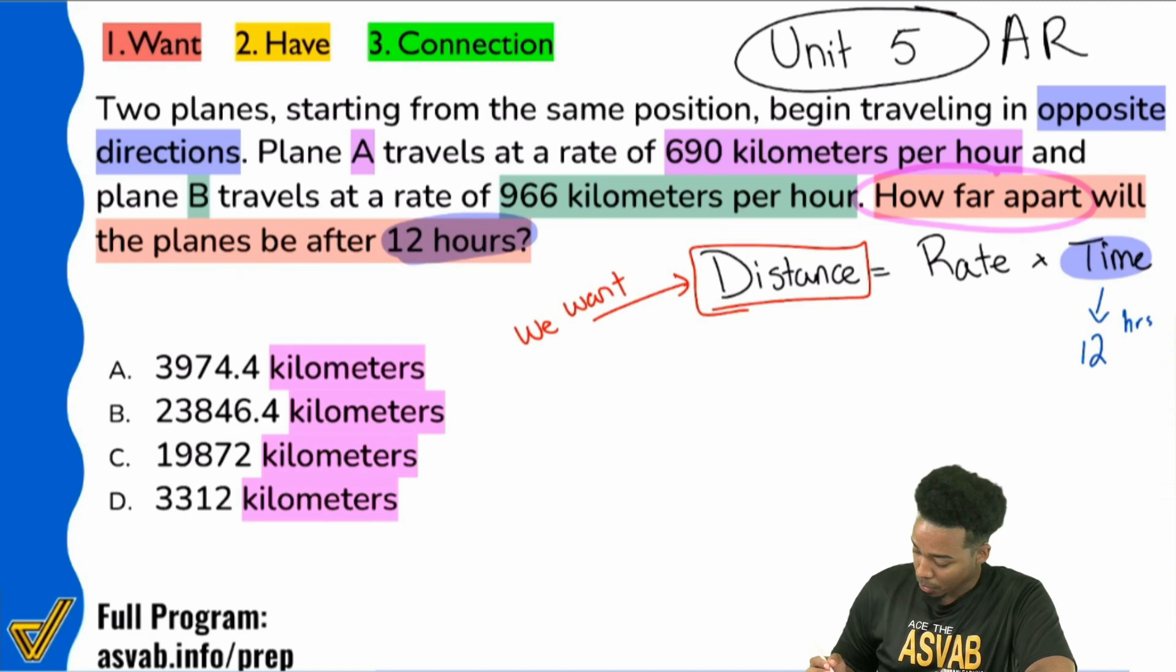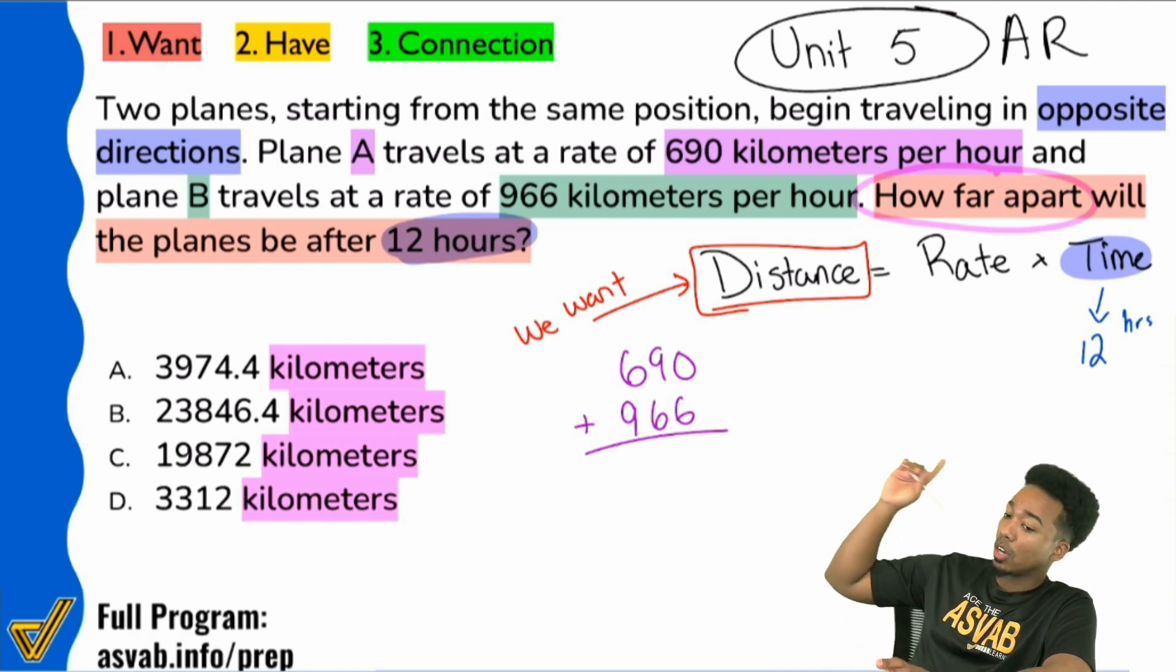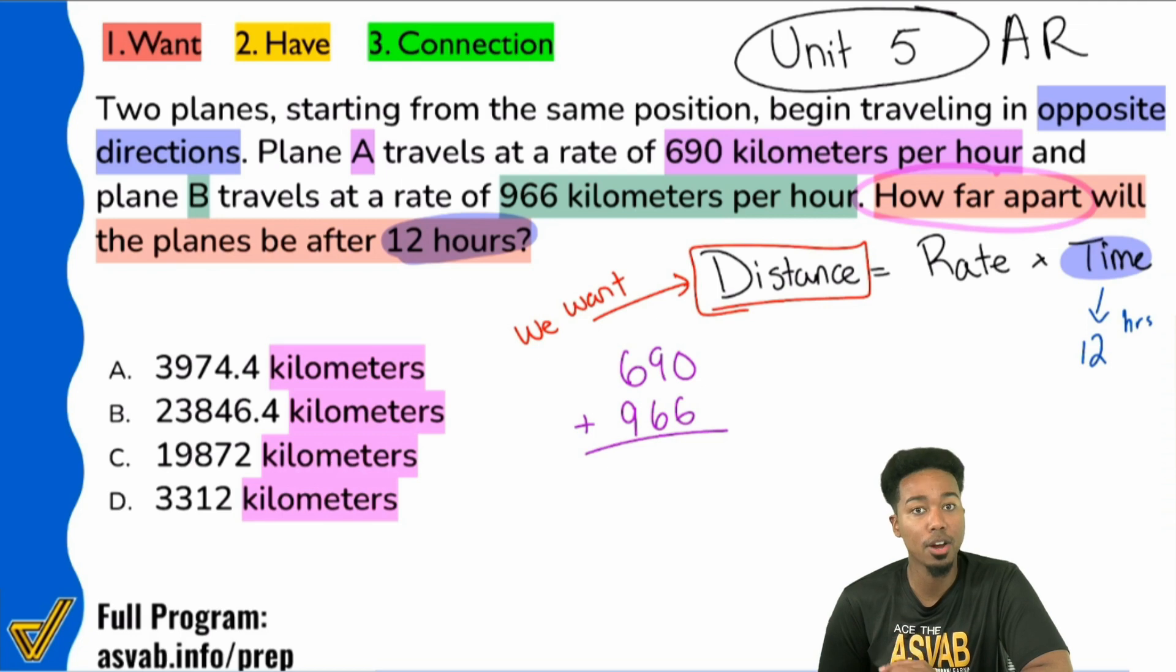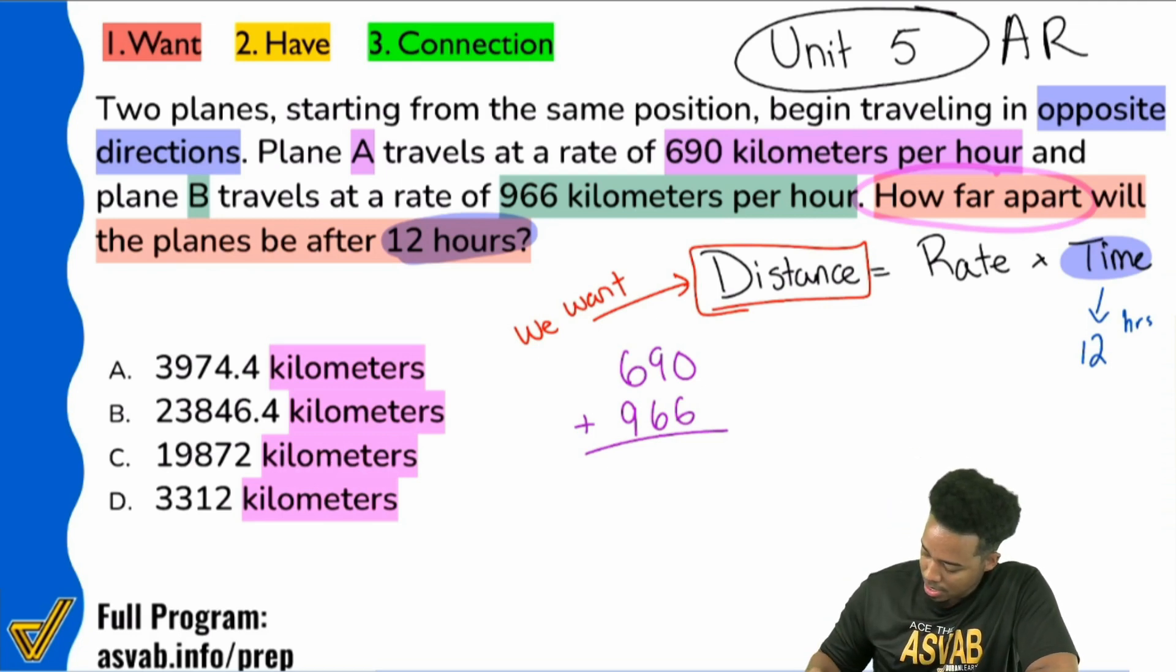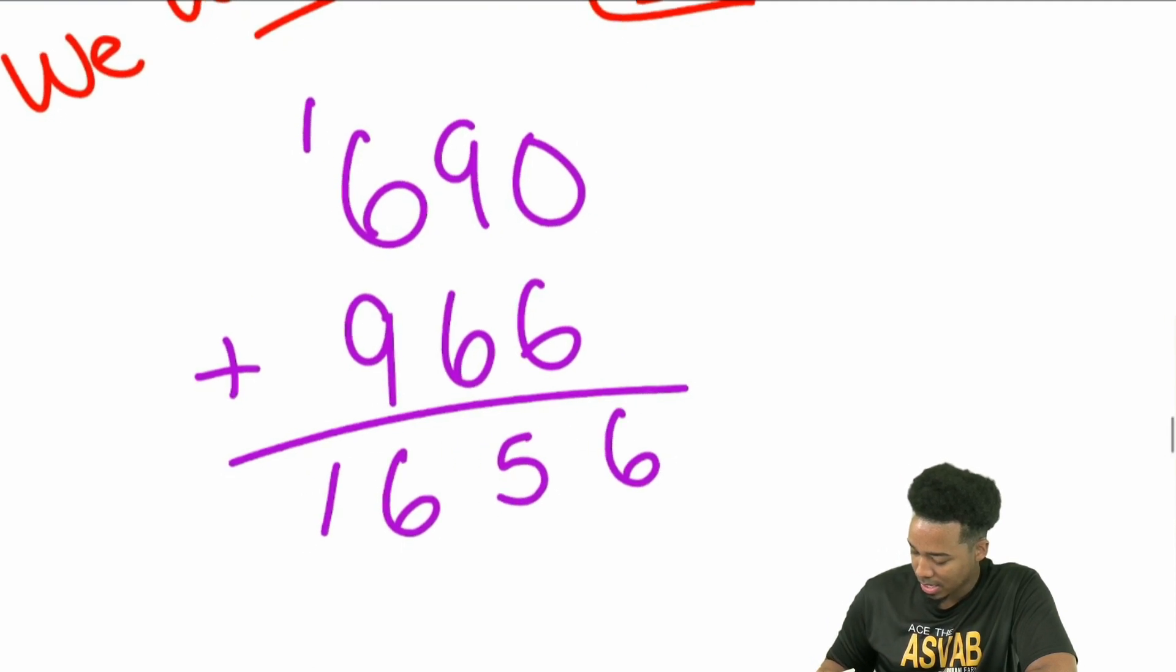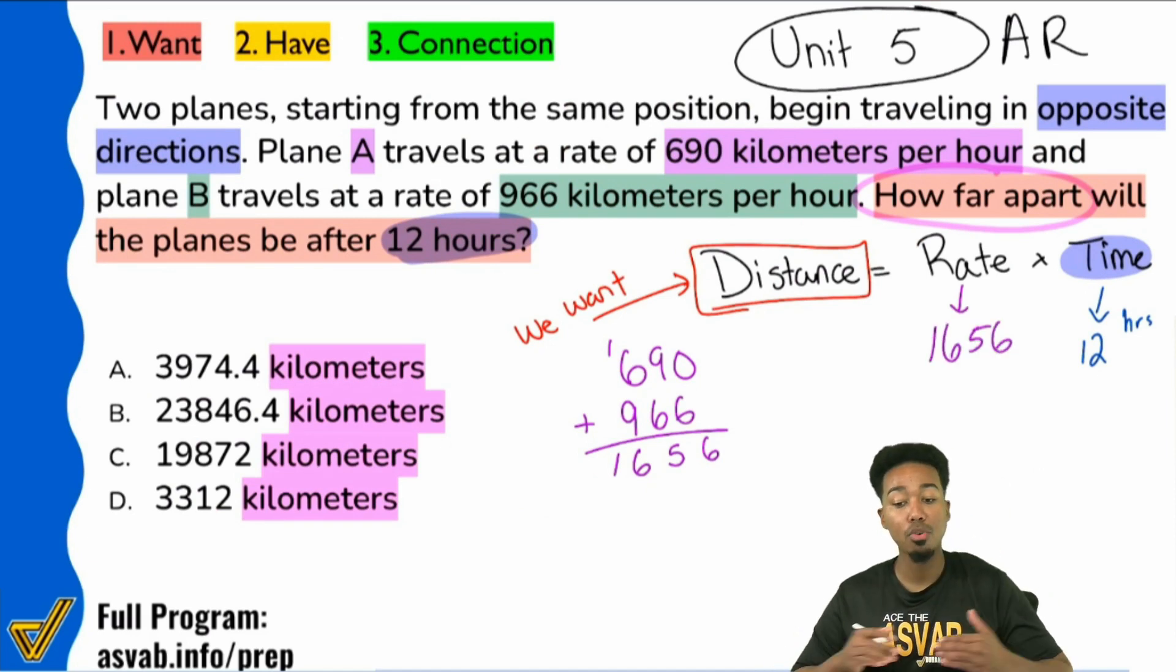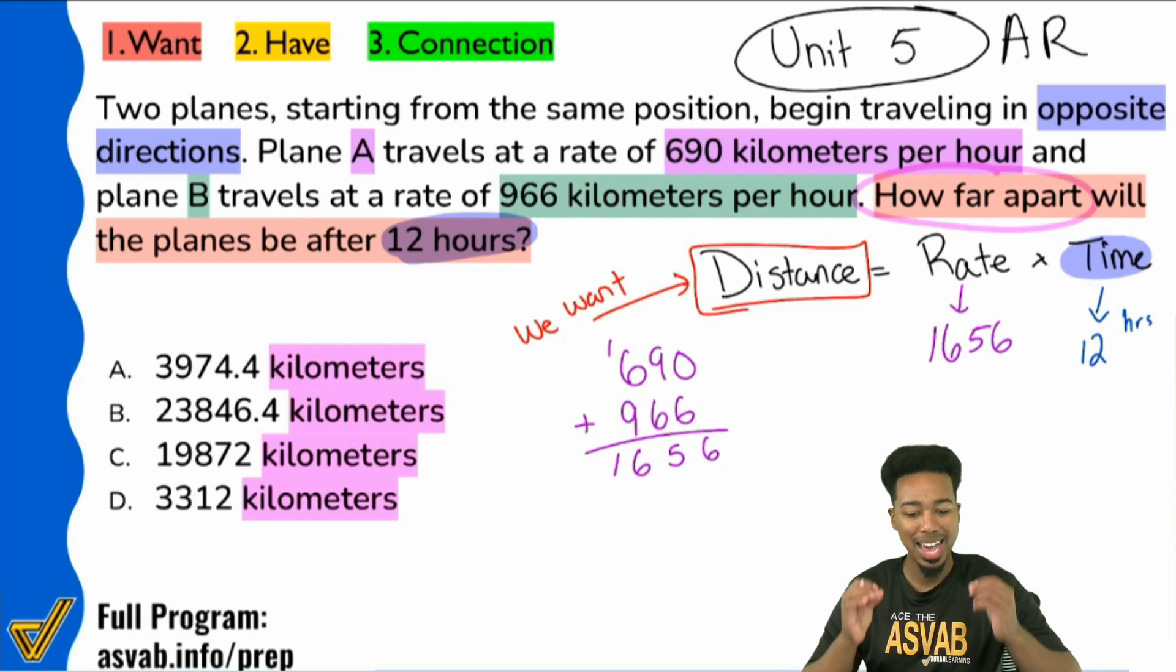So with that said, my party people, right here, we will add the 690 and the 966 to get our true rates. And again, I explain all of this in the unit five of the arithmetic reasoning course. So if we add these up, 9 plus 6 is 15, carry the 1. 15 plus 1 is 16. So we have 1656. So that's the true rate. The true rate is 1656. They are moving away from each other at that rate of speed.